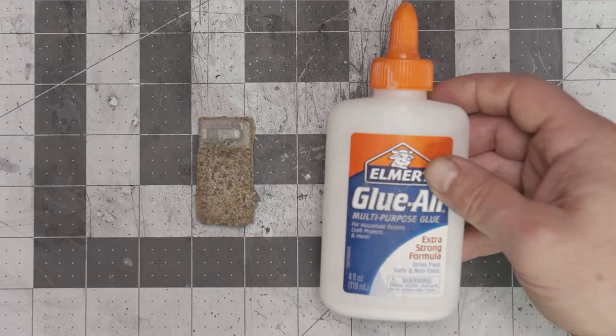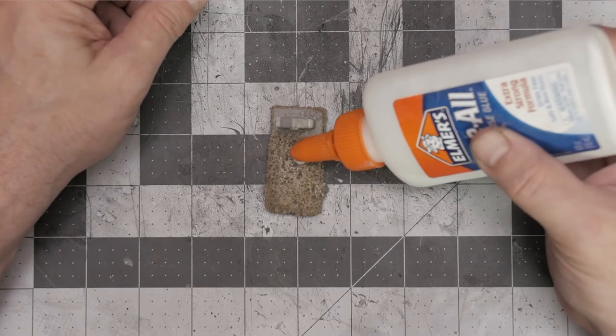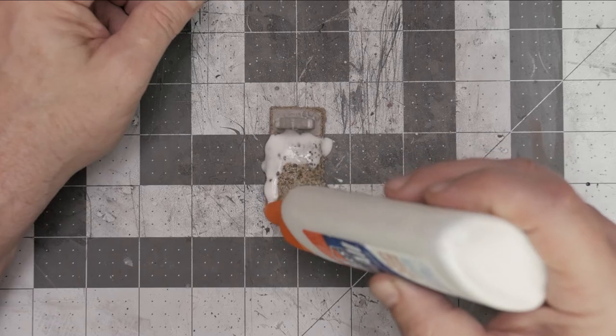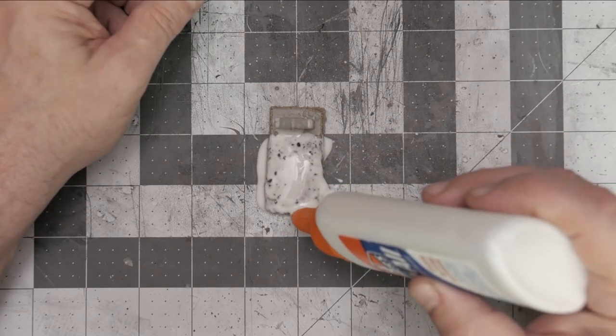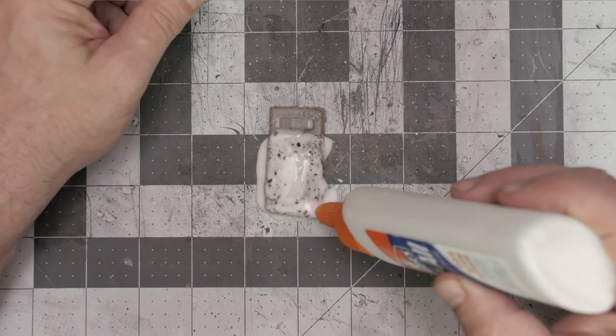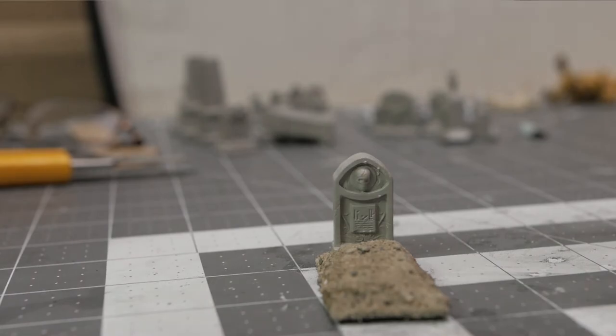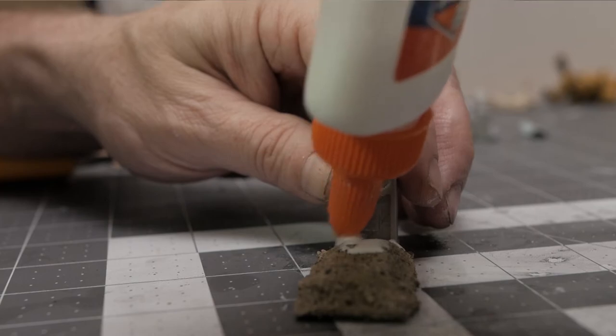Now we're ready to seal our individual little grave plot using a solution that is 50% Elmer's glue and 50% water. Make sure you get full coverage to lock in those little pieces of sand and rocks. Give it about a day to dry, and there you go—you have your very own graveyard plot.